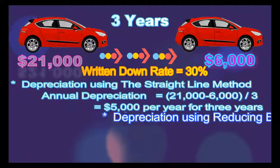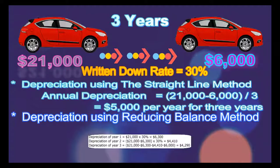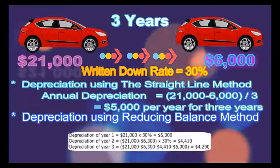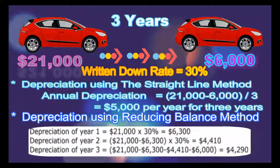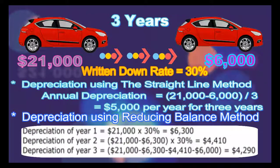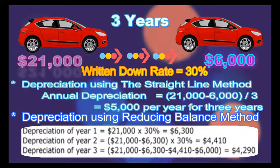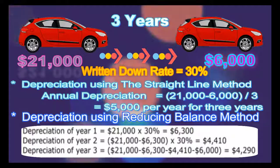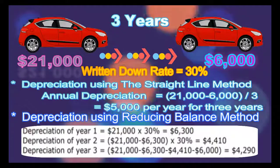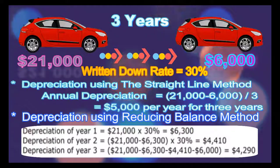As per the formulas given above, the depreciation for the next three years under each method is as follows. Note that the total depreciation under both methods was $15,000. Only the pattern of depreciation is different, so the depreciation amount for each year is different.